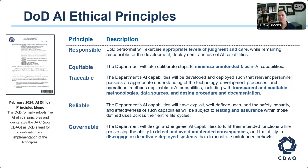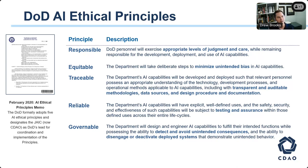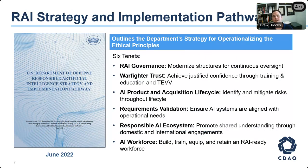We start with the DoD AI ethical principles. The U.S. Department of Defense was the first military in the world to adopt ethical principles for AI — a set of ideas we're committed to as a department in our adoption of AI. These aren't controversial as written; it's basically stating that we're going to do good things with artificial intelligence and not bad things. The question is: how do we actually implement those in practice? The RAI strategy and implementation plan is the operational guidance we work under.